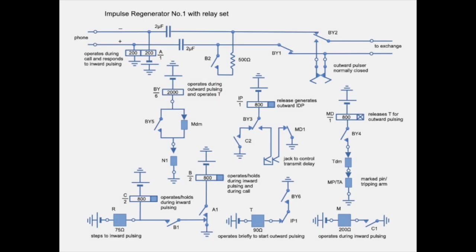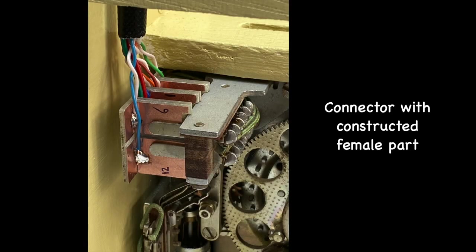You will notice the three electromagnets R, T and M that are part of the regenerator. Then there are the six relays A, B, C, BY, IP and MD. Also part of the regenerator are a number of contacts, here shown as N1, TDM, MDM and MP/TA. I had to reconstruct a female connector for the link between the relay set and the regenerator.